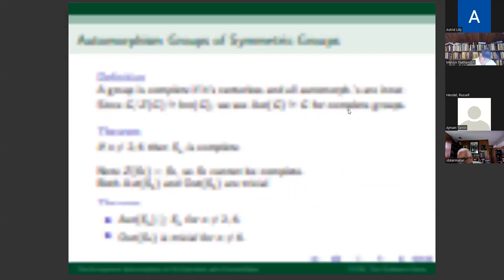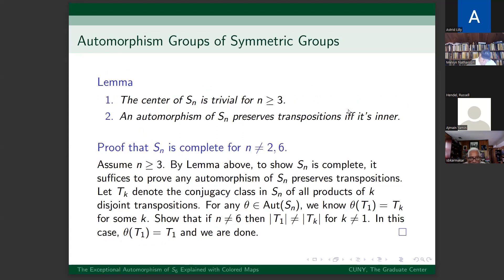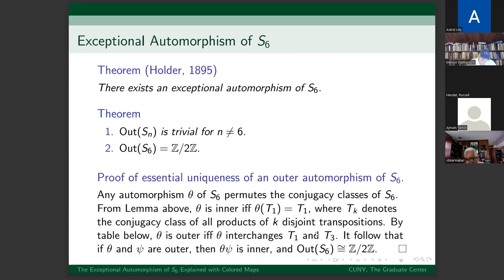We saw that the outer automorphism group of S_N is trivial for all N except N = 6, because of the size equality that only occurs when N = 6. In 1895, Hölder showed there exists an exceptional automorphism of S6. The outer automorphism group of S_N is trivial for N not equal to 6, but the outer automorphism group of S6 is isomorphic to Z/2Z. So once you know there exists an exceptional automorphism of S6, how do you show there aren't any more?